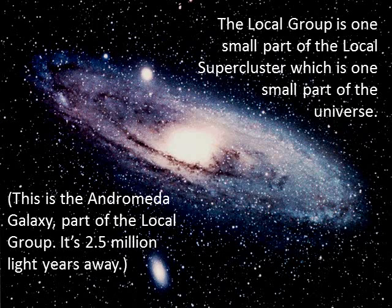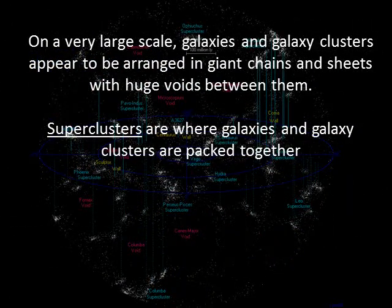This is an image of our neighboring galaxy, the Andromeda galaxy, also part of the local group. On a very large scale, the universe has structure — galaxies and galaxy clusters appear to be arranged in sheets and chains with large voids of emptiness between them. The superclusters are where the galaxies are clumped together, and everywhere we look in the universe, we see this overall structure.